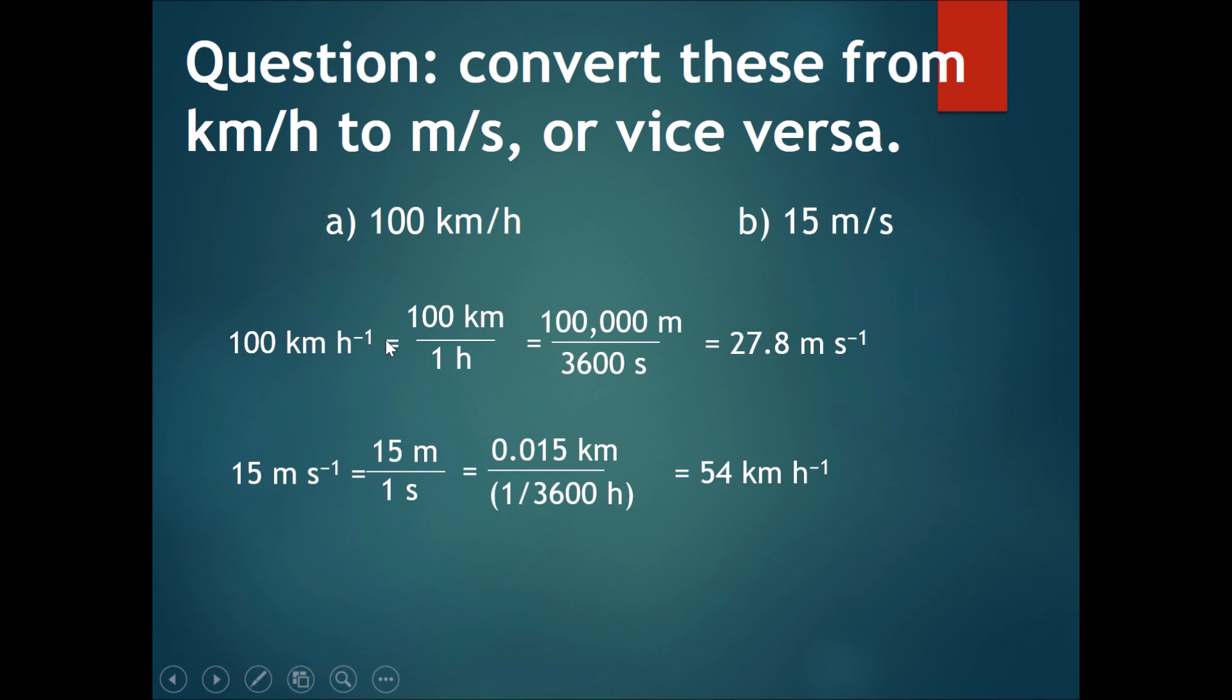If you're in a situation where you do not have to do these calculations, you can just do 100 km per hour divided by 3.6 to get 27.8 meters per second, or 15 meters per second multiplied by 3.6 to get 54 km per hour.